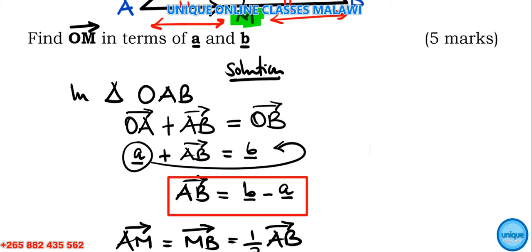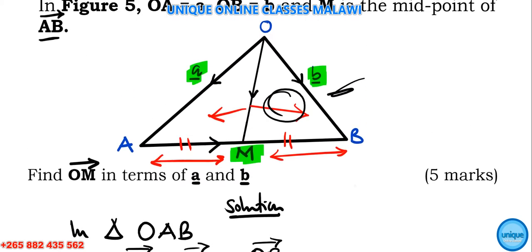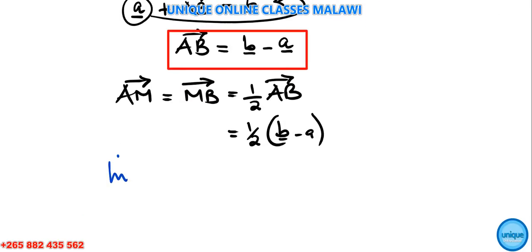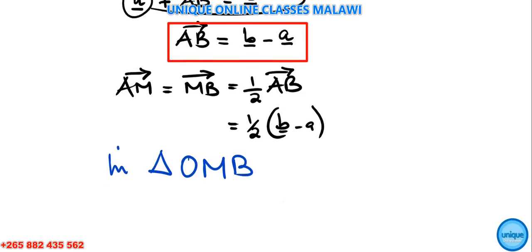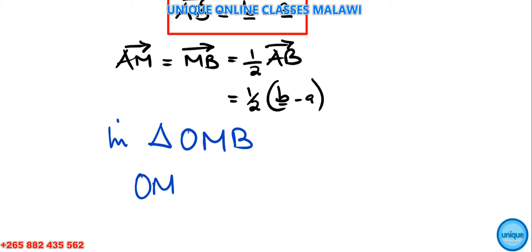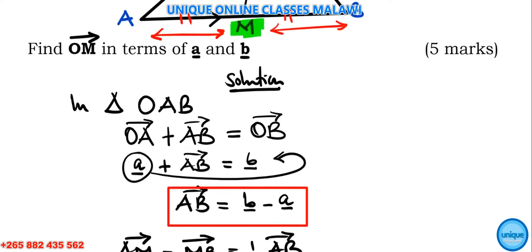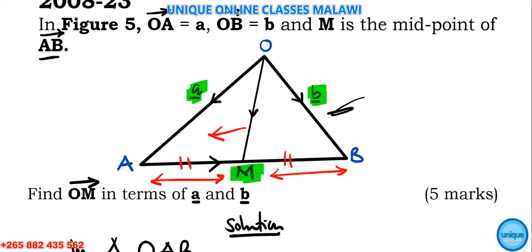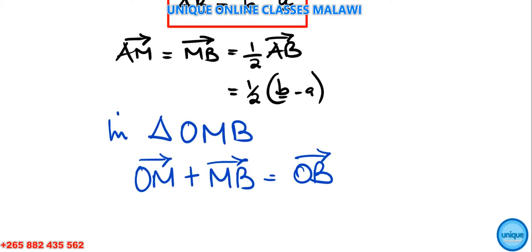In triangle OMB: OM + MB = OB. So OM + MB = b, where MB is half of AB, which is ½(b - a). Removing the brackets: OM + b/2 - a/2 = b.